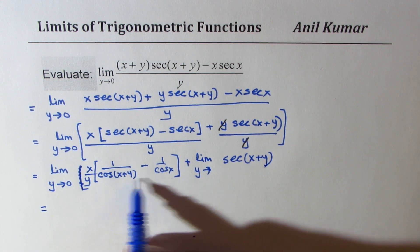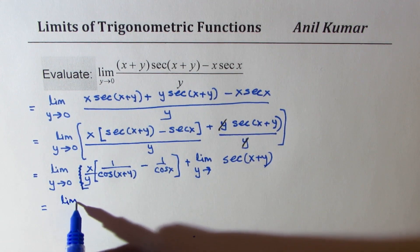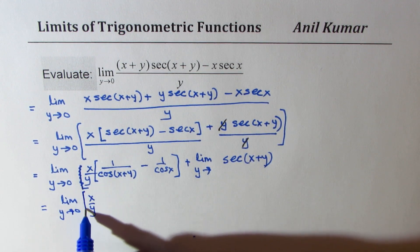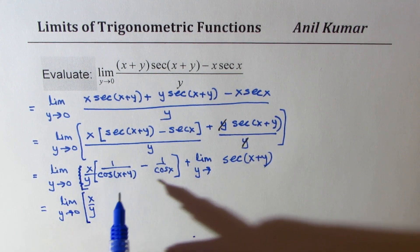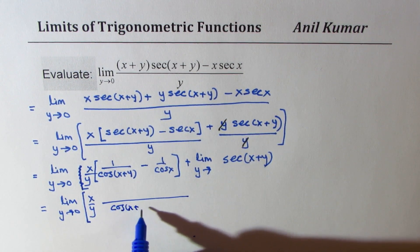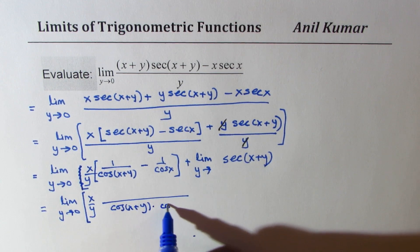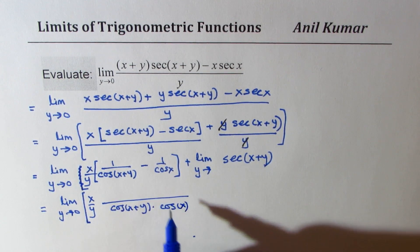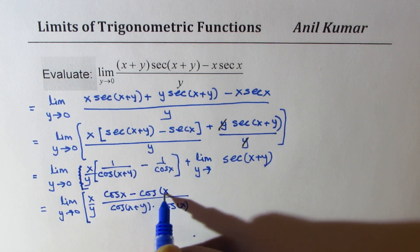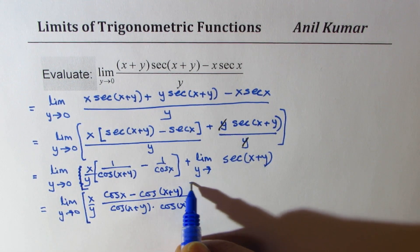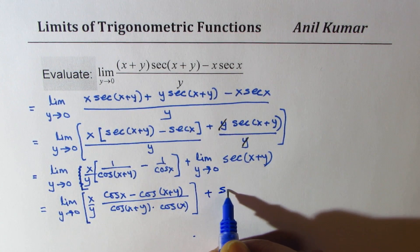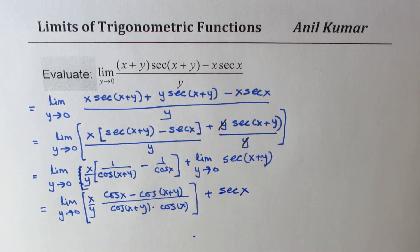So at this stage we can take the common denominator, so we get limit y approaches 0, x over y, and here we have term cos x plus y times cos x, cross multiply, so we get cos x minus cos of x plus y. And this limit y approaches 0 will be plus secant x if I substitute y as 0.